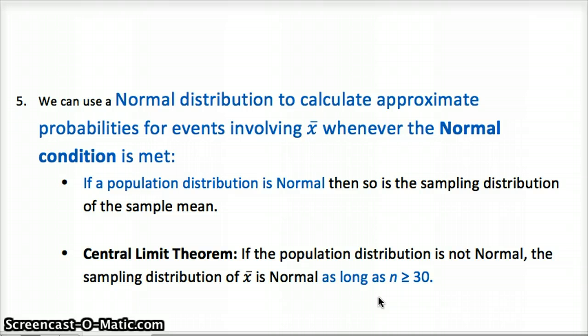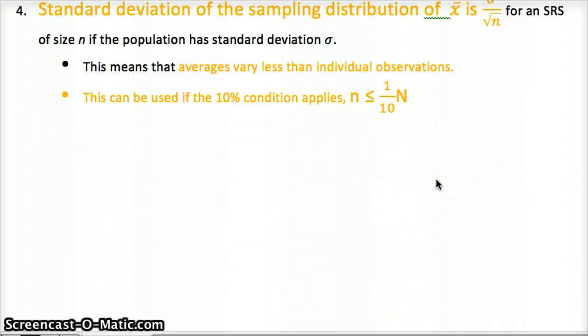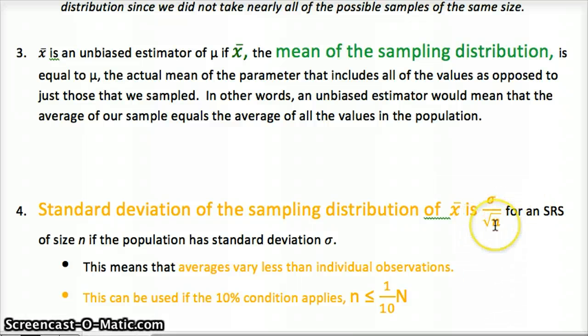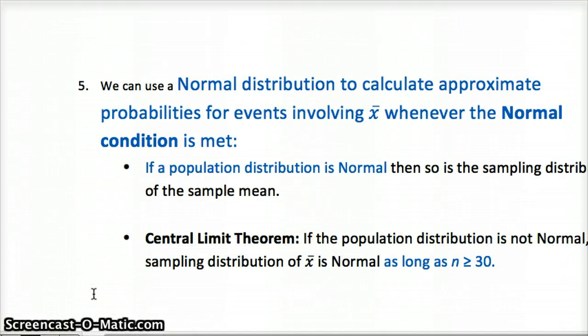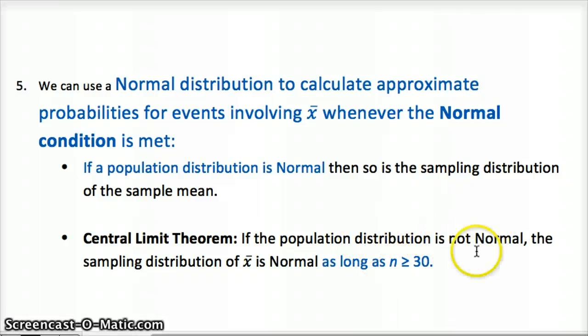So again, the random condition is exactly the same, that if we have an SRS and a nice design for a study, we'd have an unbiased estimator, meaning the mean of the sampling distribution would be the true mean. So the center of that normal curve would be the true center. The 10% condition here, the independent condition, is that we're sampling less than 10% of the population, and then we can take the population standard deviation and divide by the square root of the sample size as long as we've satisfied that condition. And then, the normal condition is that as long as n is greater than or equal to 30, we can go ahead and assume that the sampling distribution is normal. Okay, so that's the main difference.